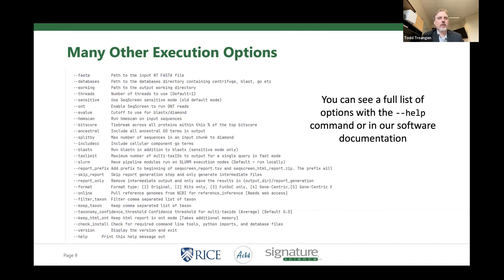For example, the thread default is one — but obviously if you're in a multi-threaded environment with multiple cores, you want to crank that up. And if you're more of a power user, you may want to change the e-value or bit-score thresholds. There are a lot of parameters, and we have documentation for all of them. If your questions aren't answered or you're confused, ping us over email or post an issue on the GitLab page.